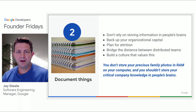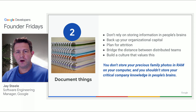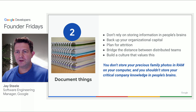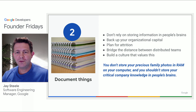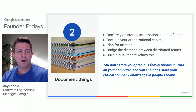Number two: document things. The importance of this is amplified tremendously in teams that are distributed across time zones or internationally. Don't rely on storing information in people's brains. For example, if someone on the team is the only person who knows how to operate the software release tools, this is a major red flag. What if they were to leave the company? Plan for attrition. Plan for worst-case scenario. Your job is to build a culture and behavior on the team that values this and helps solve the problem, and proper tools are really key to making this work.